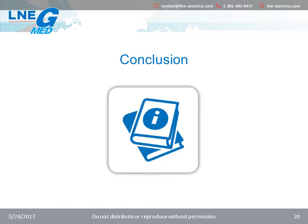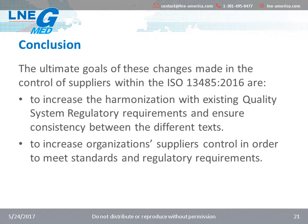So, even if not all new, the 2016 revision of ISO 13485 includes more specific requirements related to supplier control that an organization shall implement. The goal of these modifications is to increase harmonization with existing quality system regulatory requirements and ensure consistency between the different texts, but also to increase organization suppliers' control in order to meet standards and regulatory requirements.